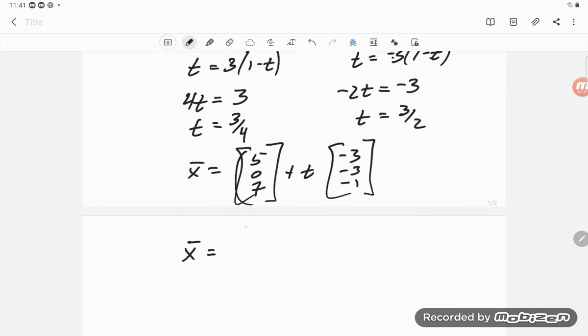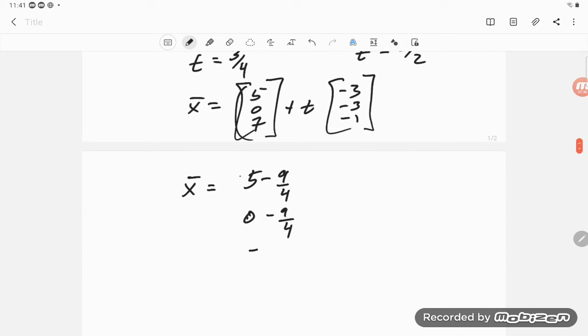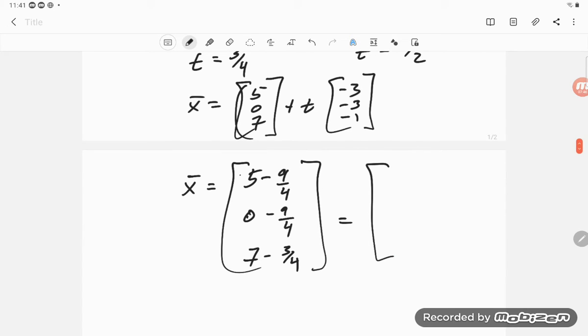And so this would say x could equal, if we go with the 3/4, that's 5 minus 9/4, 0 minus 9/4, and 7 minus 3/4. And that then is 20 minus 9 is 11/4, negative 9/4, and 28 minus 3 is 25/4.